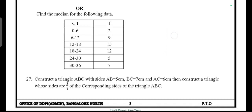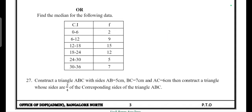Construct a triangle ABC with side AB = 5 cm, BC = 7 cm, and AC = 6 cm. Then construct a triangle whose sides are 3/4 of the corresponding sides of triangle ABC.